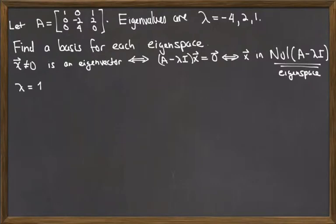So let's take lambda equal to 1, and let's find the corresponding eigenspace. In this case, when I take lambda to be 1, I'm really just asking for a basis for the null space of A minus I. So let's compute A minus I.